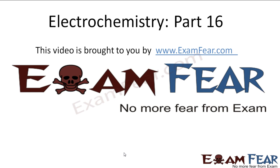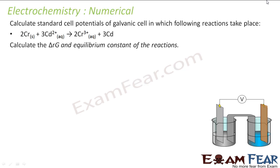Hello friends, this video on electrochemistry part 16 is brought to you by examfear.com. Let's take this numerical. Now we have to calculate the standard cell potential of the galvanic cell in which this reaction occurs: chromium in solid state is oxidized to Cr³⁺ and Cd²⁺ cadmium ions are reduced to cadmium.